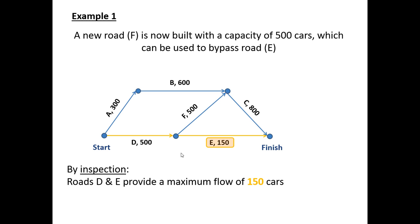E has a maximum flow of 150 cars. However, of the 500, if 150 came here along road E then you'd only be left with 350 in road F, which is important for our next consideration.